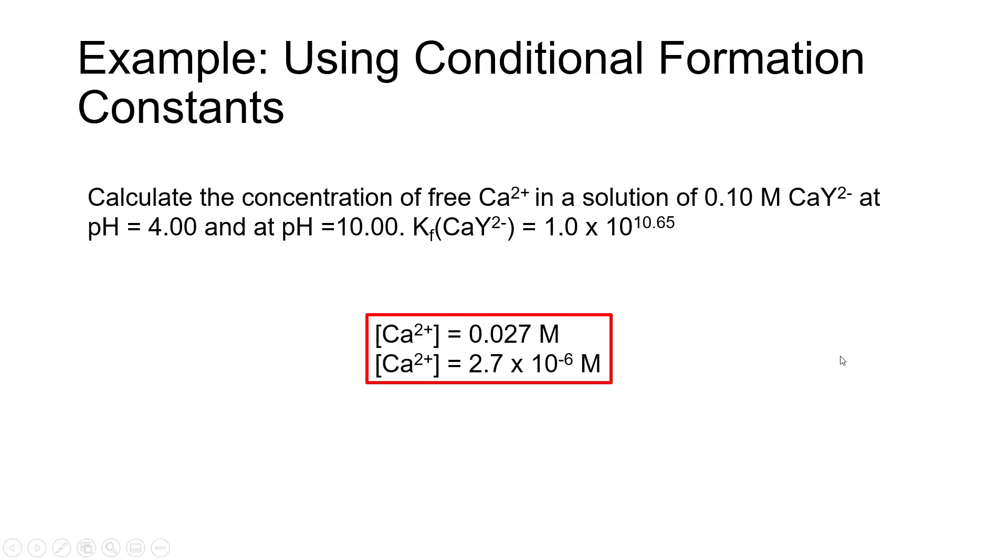Based on my calculations, I find that at pH 4, the calcium 2 plus concentration is equal to 0.027 molar, which again would suggest that our assumption that it's negligible compared to the 0.1 molar concentration of the calcium Y2 minus complex is not a great assumption. It introduces a significant amount of error into the calculation.